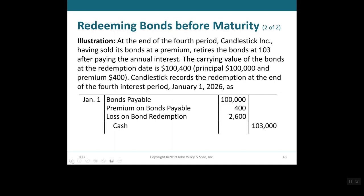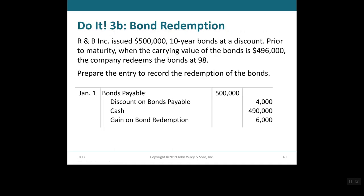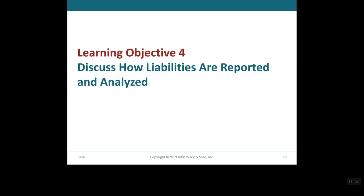Here's another example: RMB Inc. issues 5, 10-year bonds at a discount. Prior to maturity, the carrying value of the bonds is $496,000 and the company redeems them at 98, meaning 98% of the $500,000 face value, so cash paid is $490,000. The discount on bonds payable is $4,000. To find the gain on redemption, we take the bonds payable minus cash paid of $490,000 minus the discount of $4,000, giving a gain of $6,000 on bond redemption. That brings us to the end of Learning Objective 3.